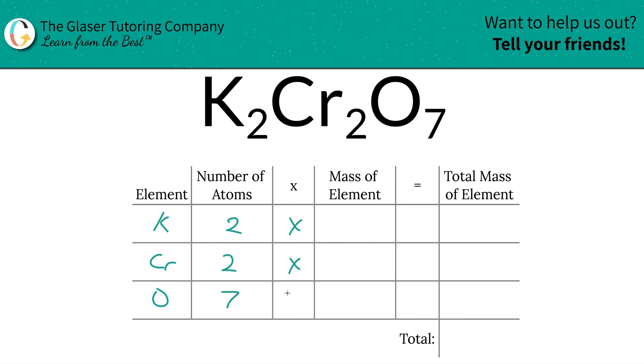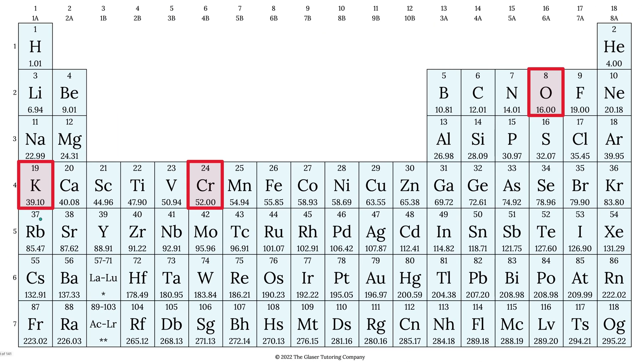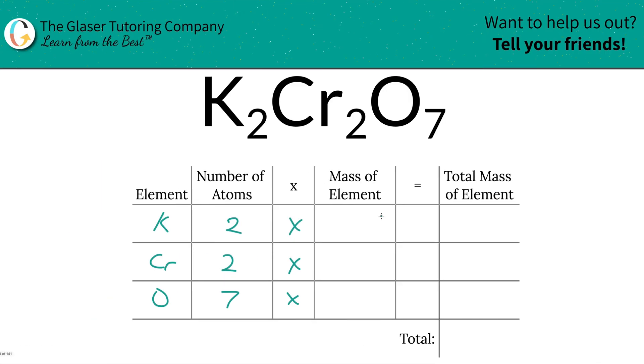Then we take the number of atoms and multiply it by the mass of that particular element. The mass is found on the periodic table: potassium is 39.10, chromium is 52, and oxygen is 16.